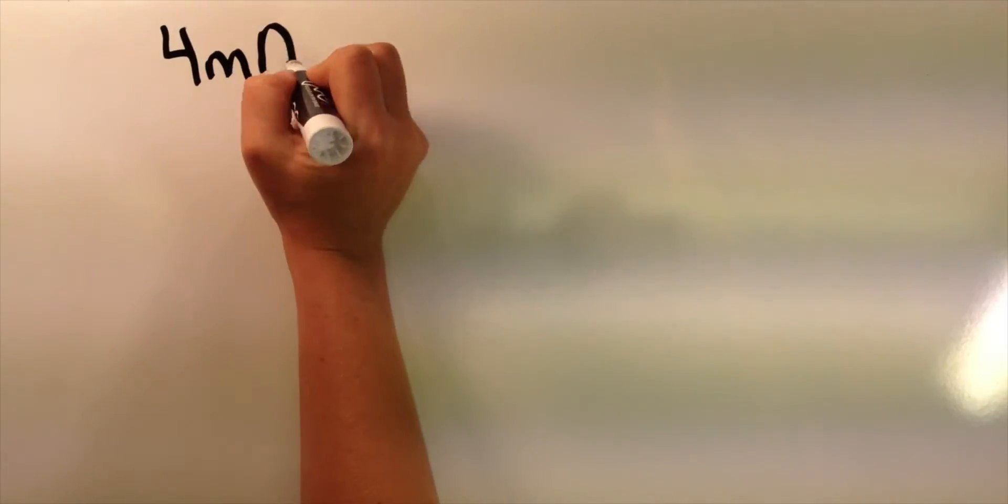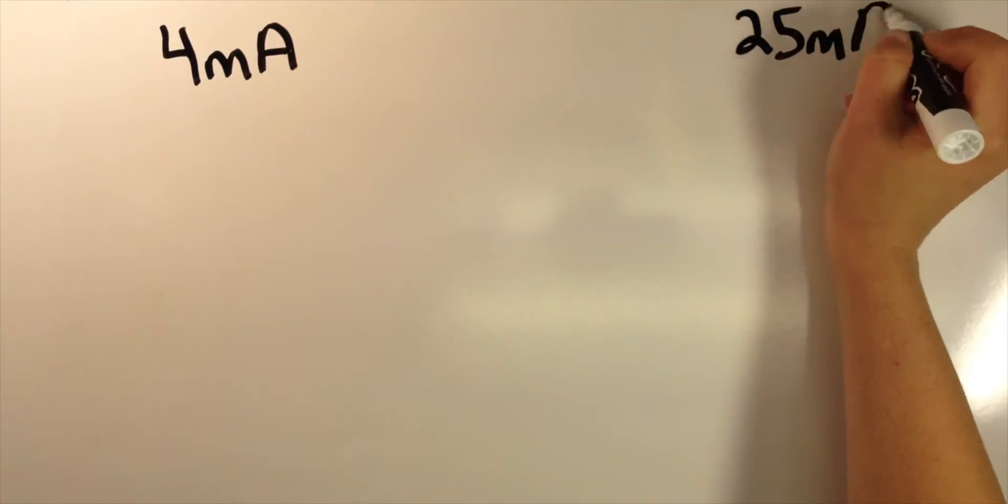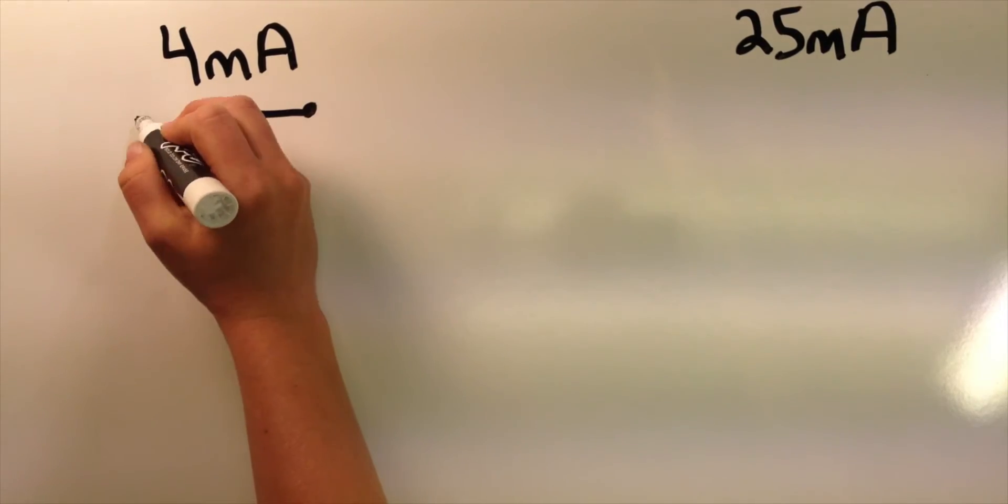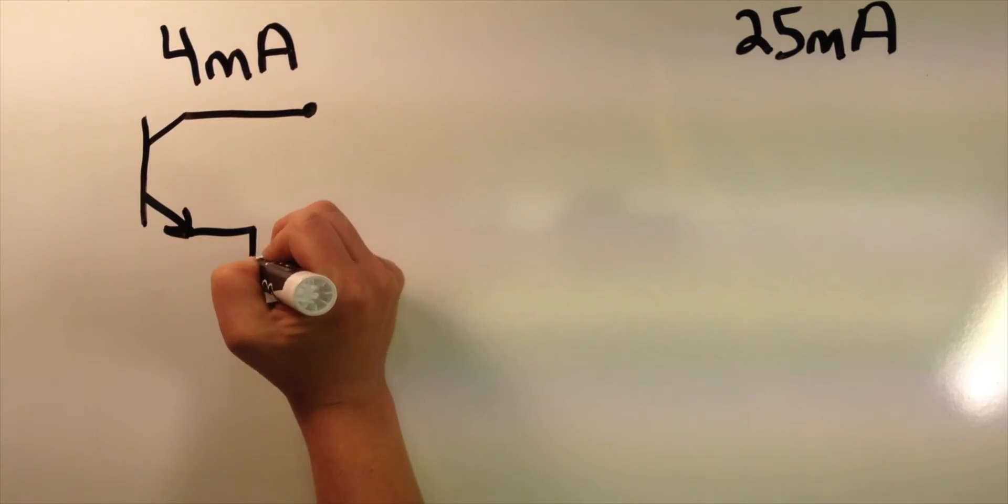The different current ratings also have different properties and internal switches that one should consider before ordering. The 4mA sinking option uses a phototransistor as a switch.